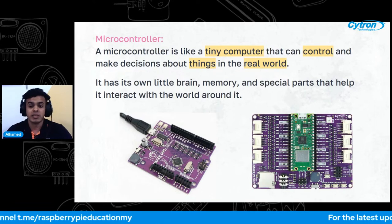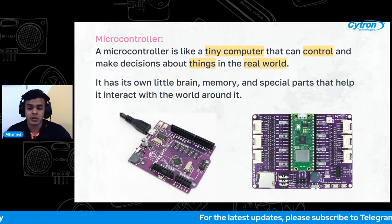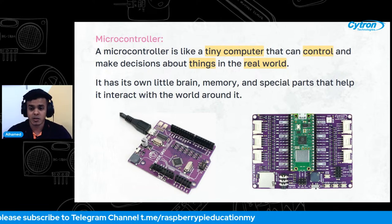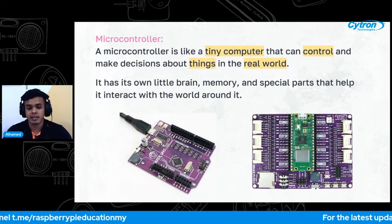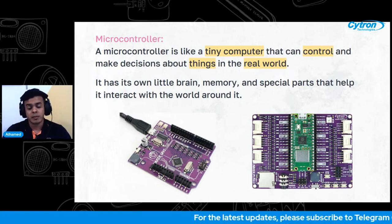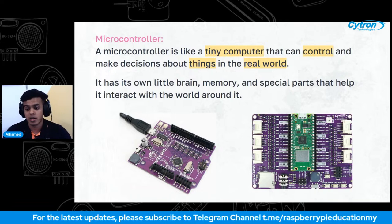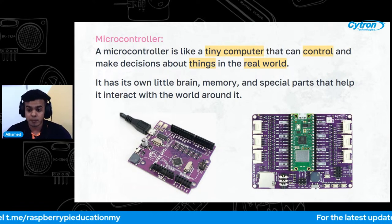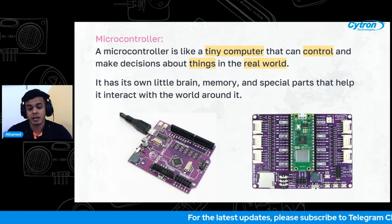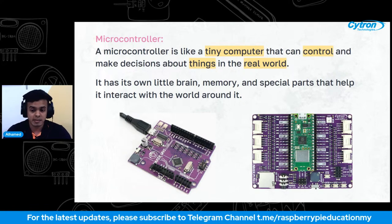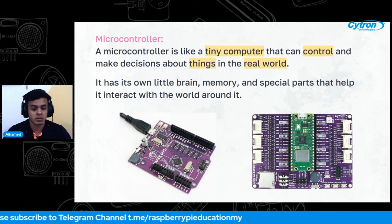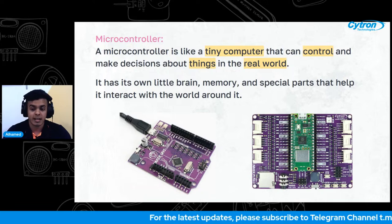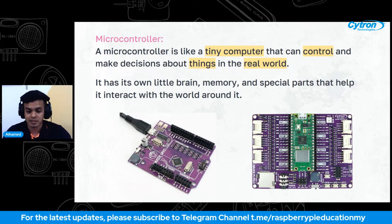A microcontroller is like a small computer that can control and make decisions about things in the real world. It has its own little brain, memory, and special parts that help it interact with the world around it. The purpose of a microcontroller is to help us create and control different projects — it can make lights turn on and off, make robots move, measure temperature or humidity, and even play music or games. Think of it as a small smart device that can understand what we want it to do, then does it.